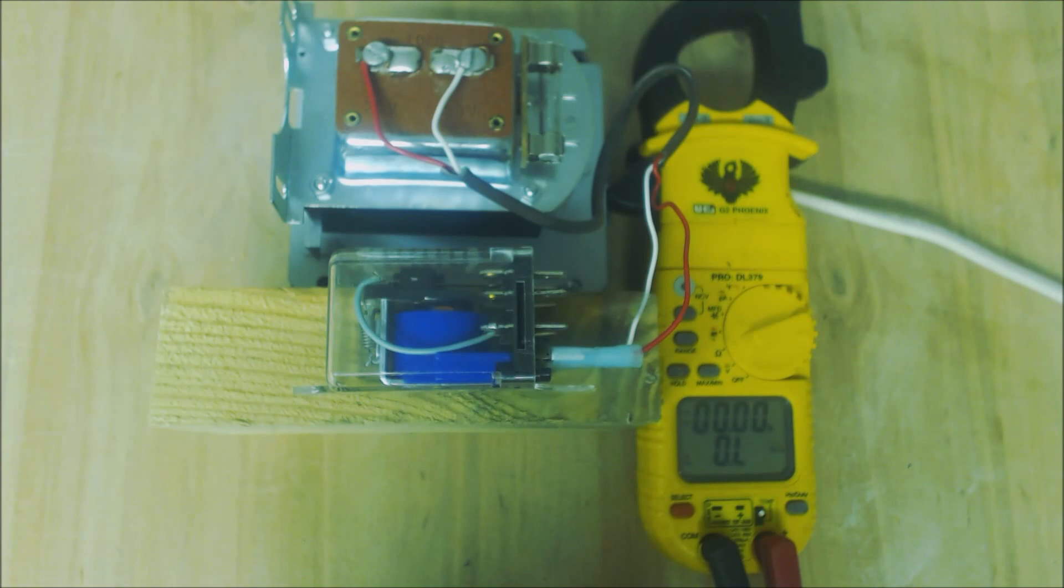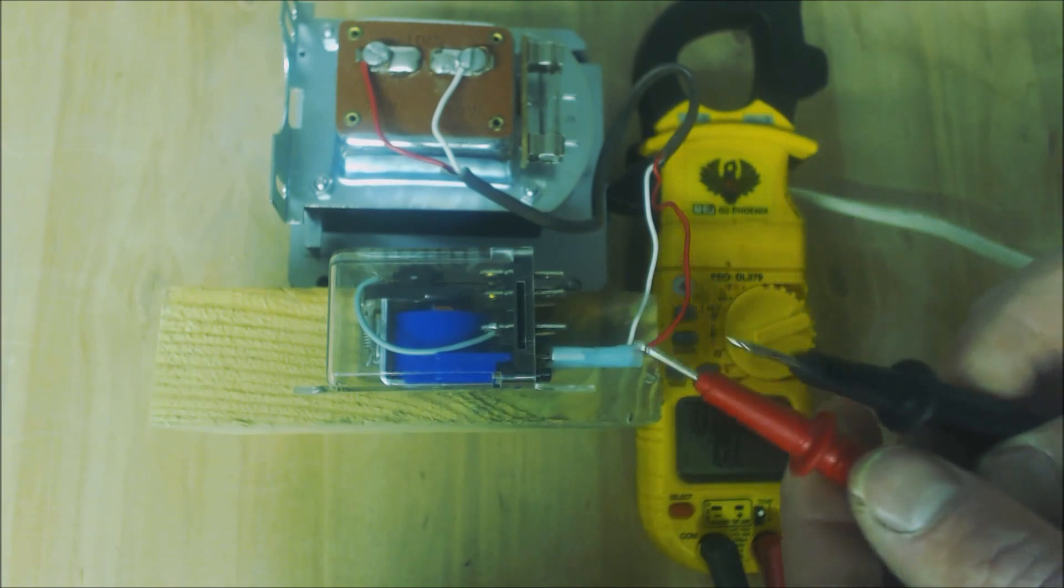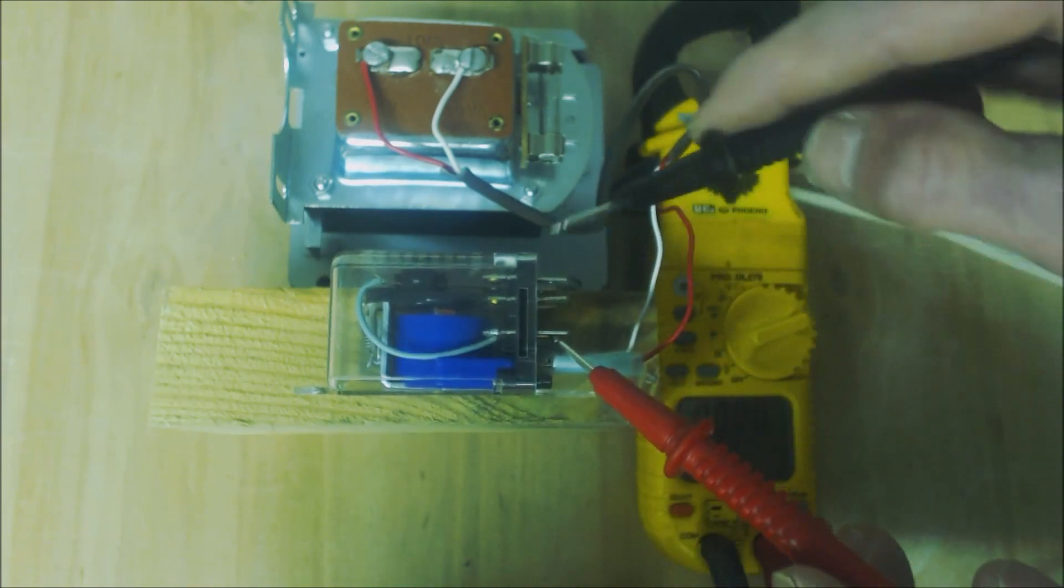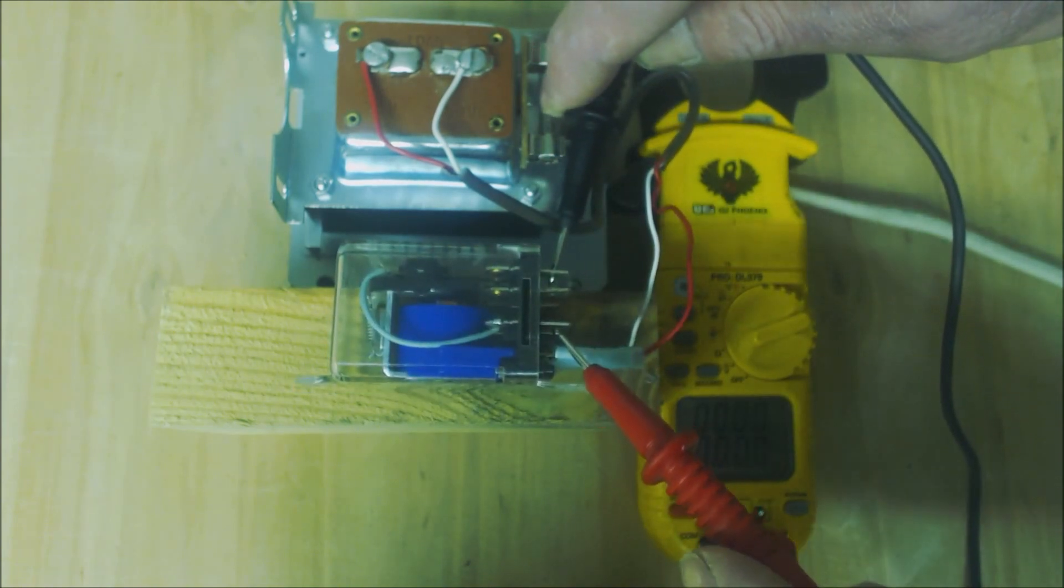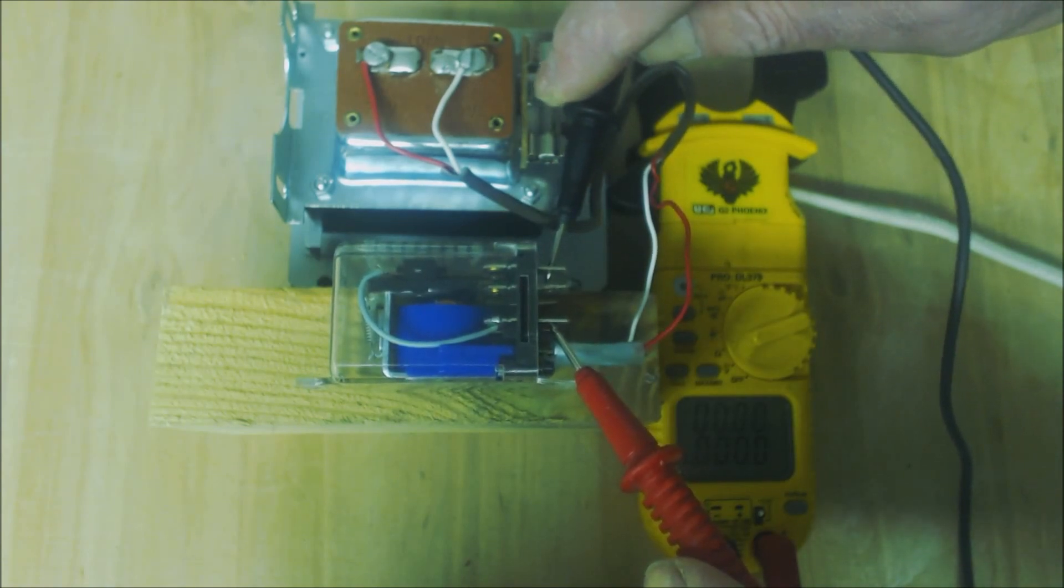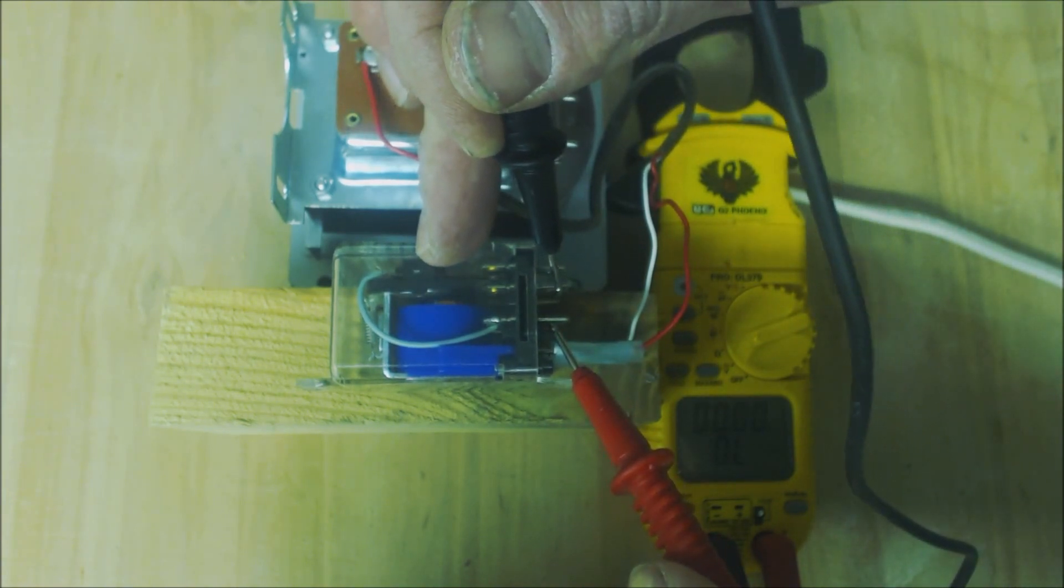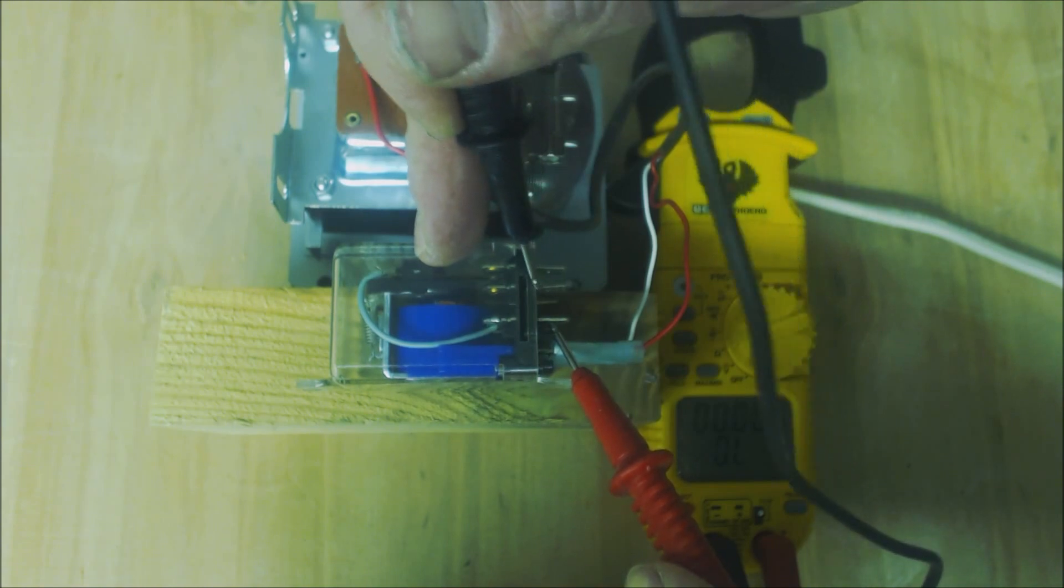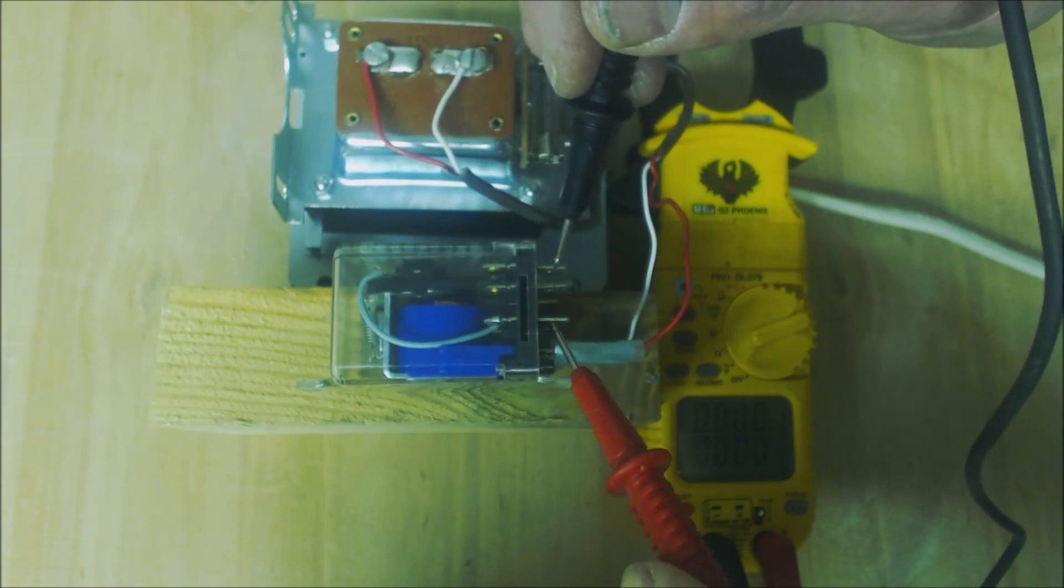What we're going to do is I'm going to put this multimeter on resistance, and I'm going to put it right here and right here, and we should have zero ohms of resistance, which we do. Between here and here we do not have any resistance, meaning that the electrical contacts are not touching. The wires coming over here and coming right over to this contact.